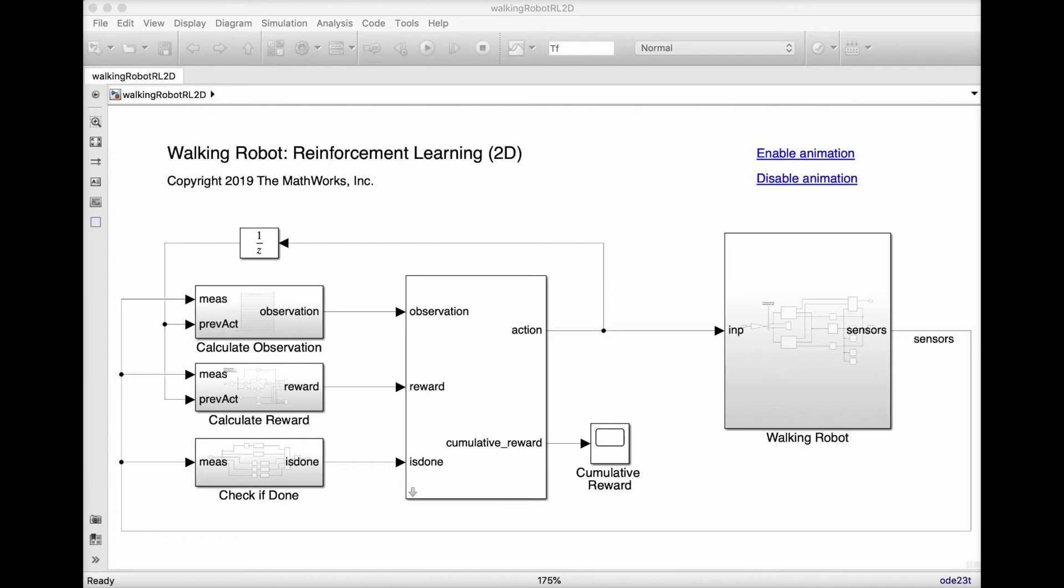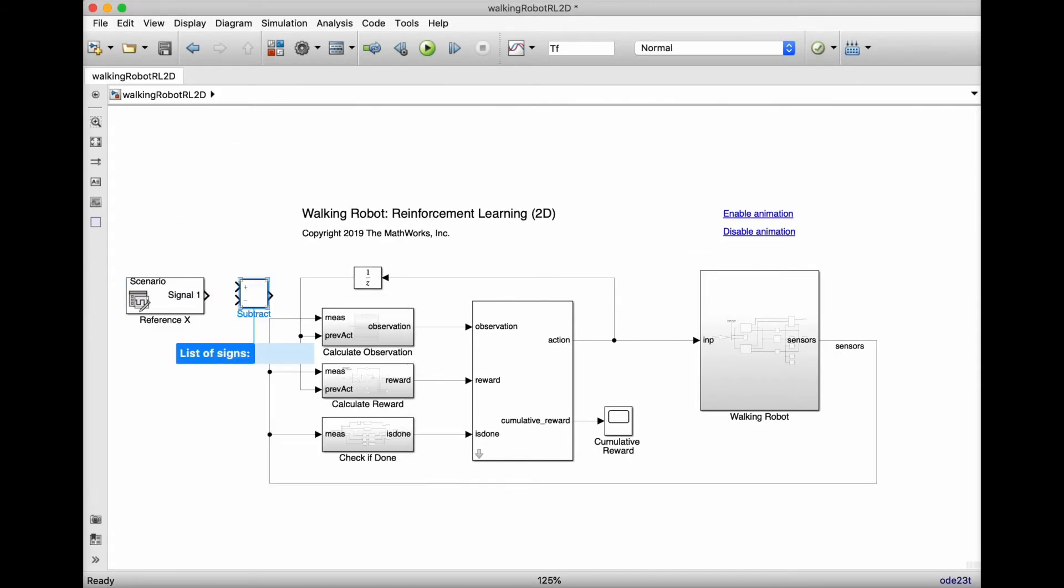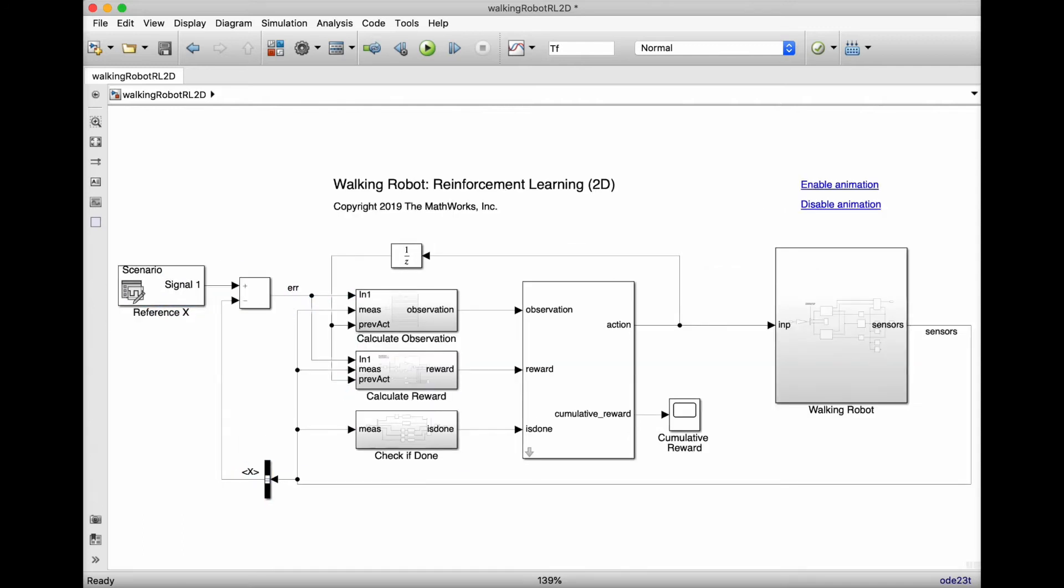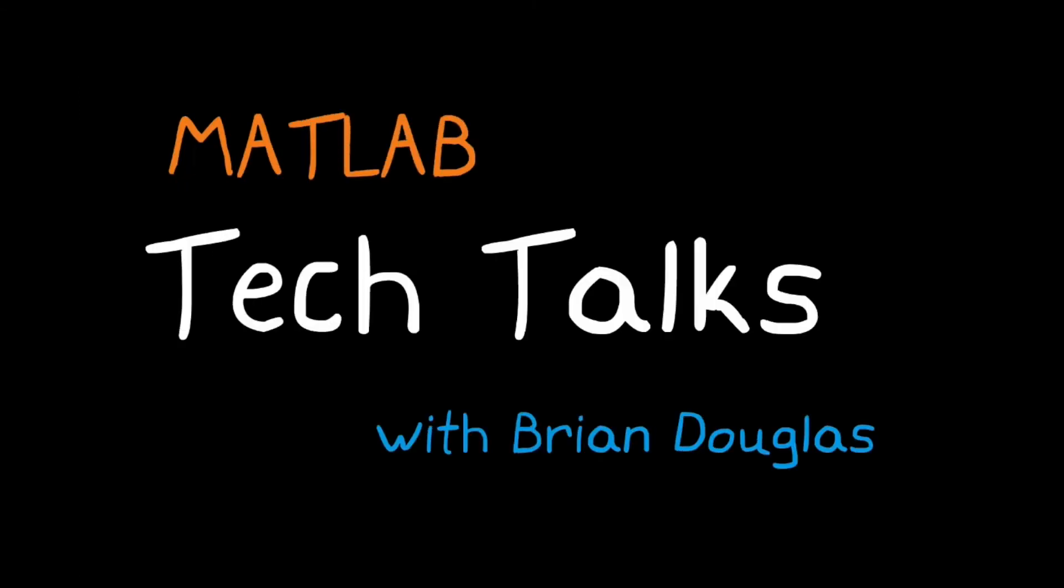This example comes with an environment model where you can adjust training parameters, train an agent, and visualize the results. In this video we're also going to look at how we can modify this example to make it look more like how we would set up a traditional controls problem, and then show some of the limitations of the design. I hope you stick around for this because I think it'll help you understand how to use reinforcement learning for typical control applications. I'm Brian and welcome to a MATLAB Tech Talk.